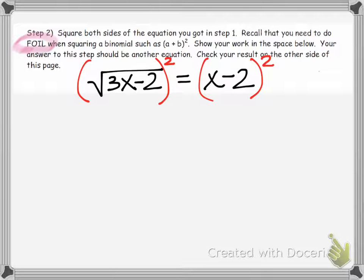When I square both sides, on the left side of the equation, the squared eliminates the square root radical sign, and I'm just left with 3x minus 2.